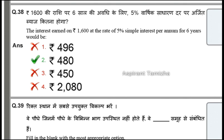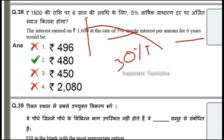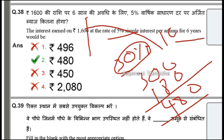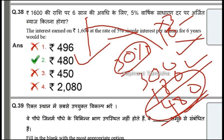The interest on 1600 at 5% simple interest per annum for 6 years would be: 5% for 6 years is 30%. 30% of 1600 — 10% is 160, so 30% is 160 into 3. 3 into 100 is 300, 3 into 60 is 180, so 3 into 160 is 480. The total is 480. Then we can go to the formula.